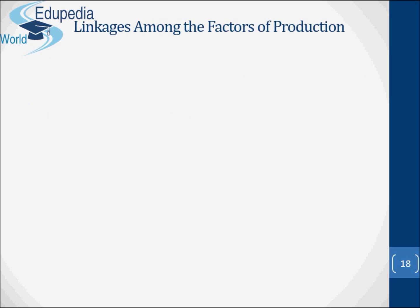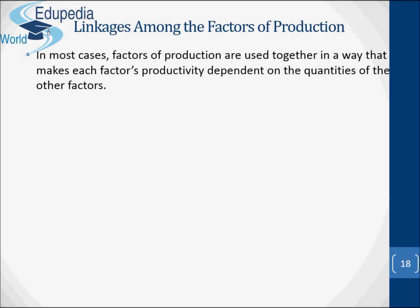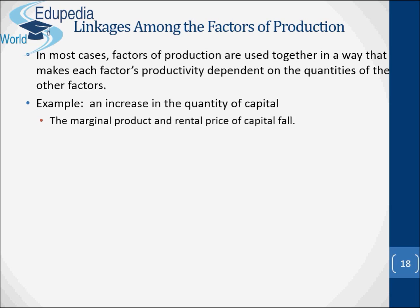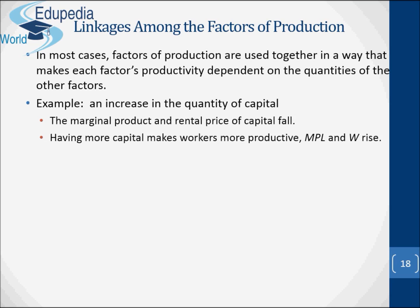Let's briefly see the linkages among the factors of production. In most cases, factors of production are used together in a way that makes each factor's productivity dependent on the quantities of the other factors. For example, an increase in the quantity of capital causes the marginal product and rental price of capital to fall, while having more capital makes workers more productive.